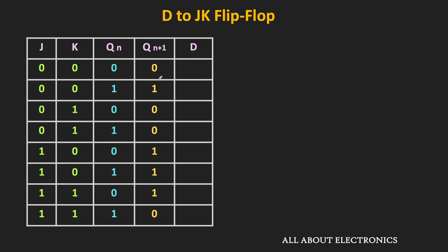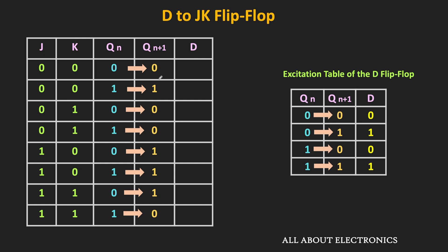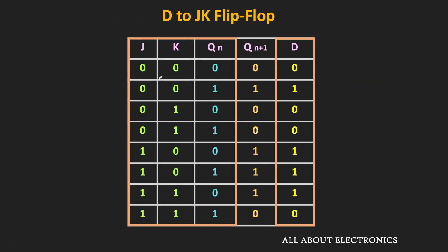Now, to get all these output transitions, let us find the required value of the D input. Once again, we will take the help of the excitation table. From the excitation table, if you want 0 as the output, the required D input is also equal to 0. And likewise, if you want 1 as the output, the required D input is also equal to 1. In this way, we can complete the entire table. Now let us find the expression of D in terms of J, K and Qn. The D input is 1 for four different input combinations: 001, 100, 101, and 110. The corresponding min terms are M1, M4, M5, and M6.